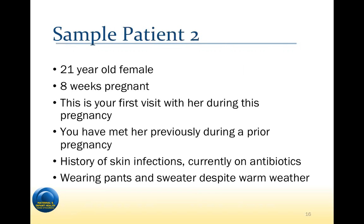The second patient is a 21-year-old female who is 8 weeks pregnant. This is your first visit during this pregnancy, but you met her before during a prior pregnancy that ended in a miscarriage at about 16 weeks. You know she has a history of skin infections and is currently on antibiotics. You come to see her in the middle of summer — it's 95 degrees, humid, and sweltering — and in her poorly air-conditioned house, she is wearing pants and a sweater. How would you address this patient?